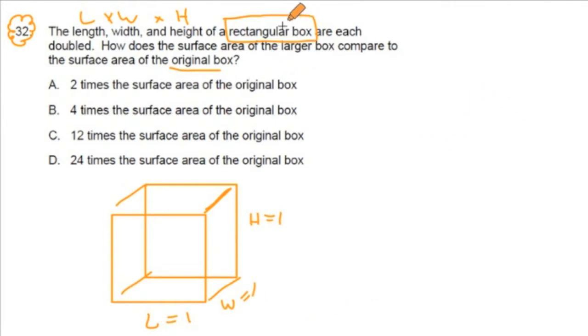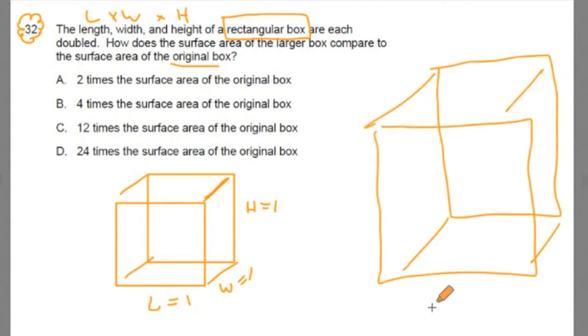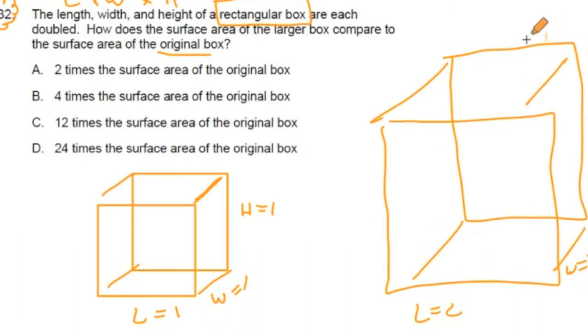And then we could think of the larger box, three-dimensional object, much larger, but its sides are doubled. So we could visualize that doubling these dimensions right here, while the new length would be 2, then we'd have a width of 2, and a height. I'll put the height over here, a height of 2.